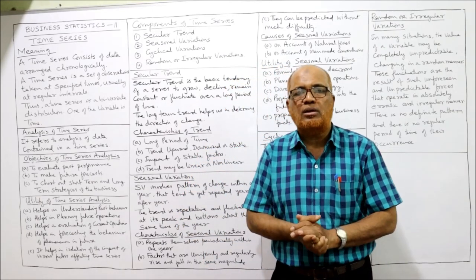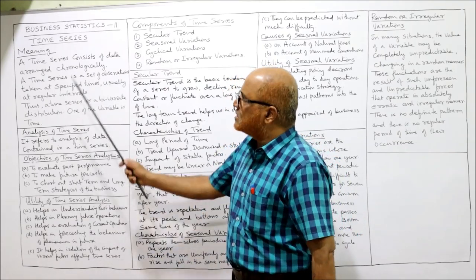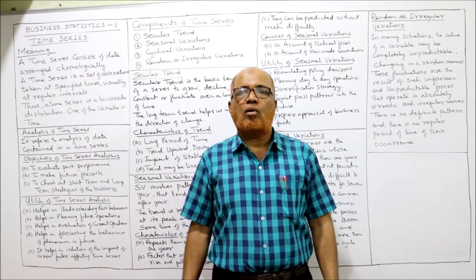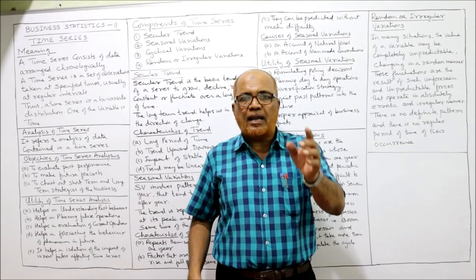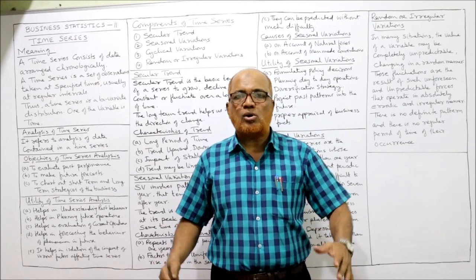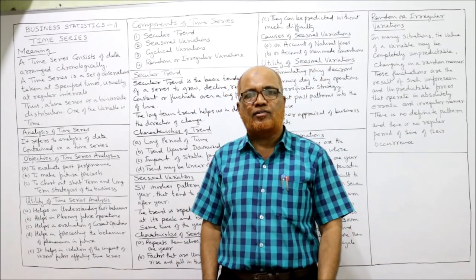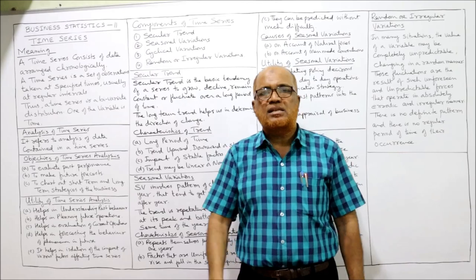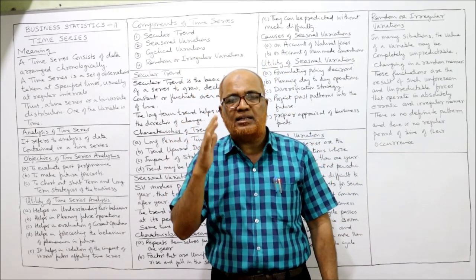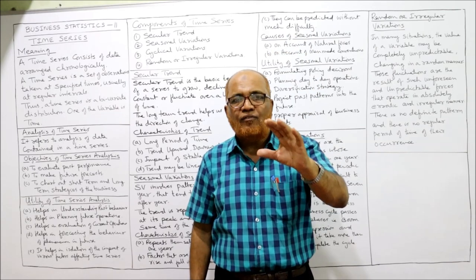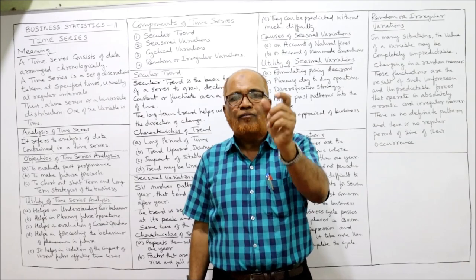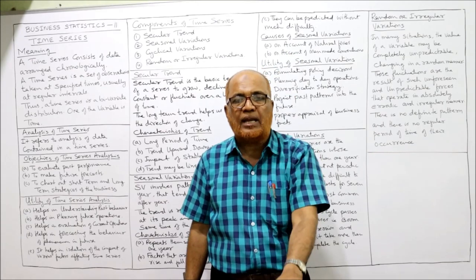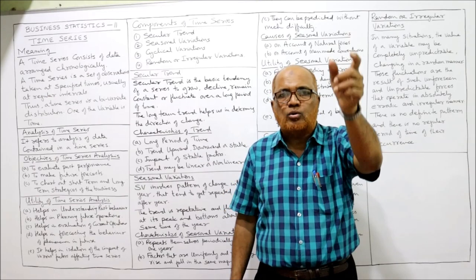In time series analysis, we can see in a number of cases the data can be arranged according to time — the variables can be arranged according to time. A simple example: a business organization will arrange the data of sales of the last 10 years. For example, data is given from 2010 to 2019 — for every year the sales are recorded. For 2010, sales are so-and-so; for 2011, 2012, 2013, up to 2019 — the sales are recorded according to time. That is time series.